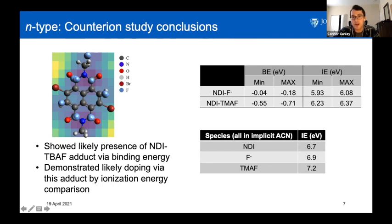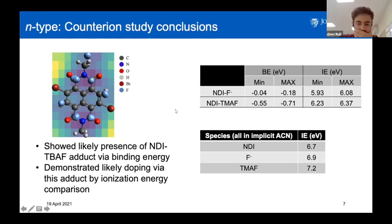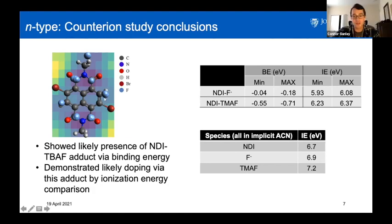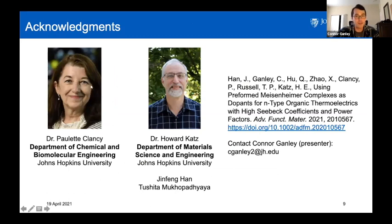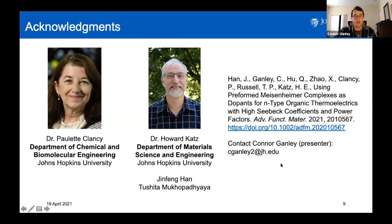Additionally, we showed that the strength — or the amount of energy required to pull an electron off this type of system — was less energy required, which leads to improved electron activity and therefore better conductivity and better thermoelectric performance. That's what we're aiming for: higher efficiency, higher power factor, better materials. This is my advisor Dr. Paulette Clancy, and our collaborators are on the right. My email is on the bottom right if you'd like to contact me. Thank you for your time — I hope any of that made sense, but it's very exciting to be doing this type of research.